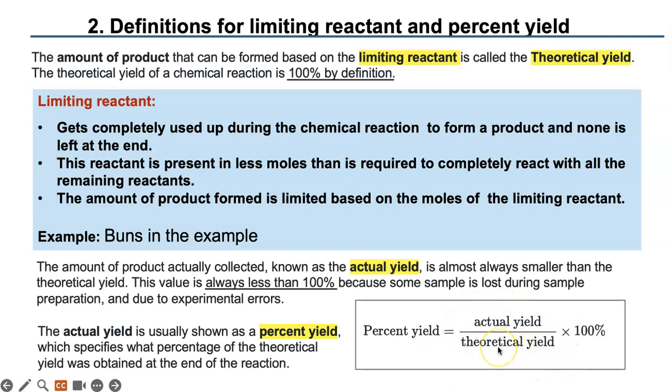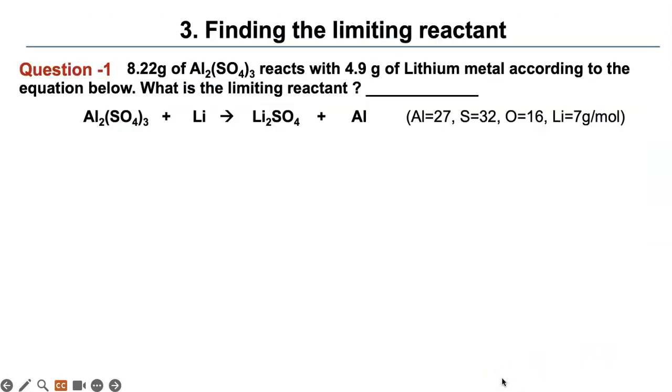We are going to calculate that too. So in our hamburger case, this would be 1.5 and this would be 2 times 100. Here's our first problem. Question 1, 8.22 grams of Al₂(SO₄)₃ reacts with 4.9 grams of lithium metal according to the equation below. Write this one. It's asking you to figure out the limiting reactant. And I've given you the molar masses of each of the elements in this chemical reaction.